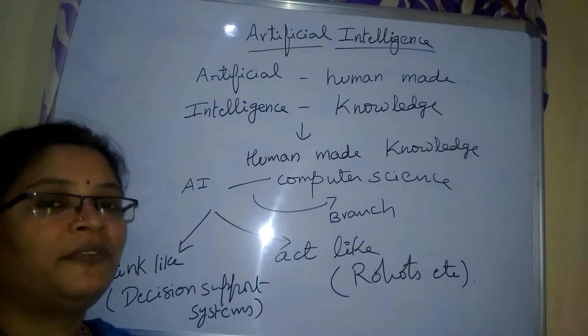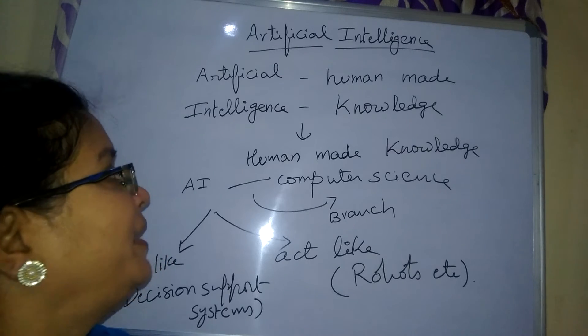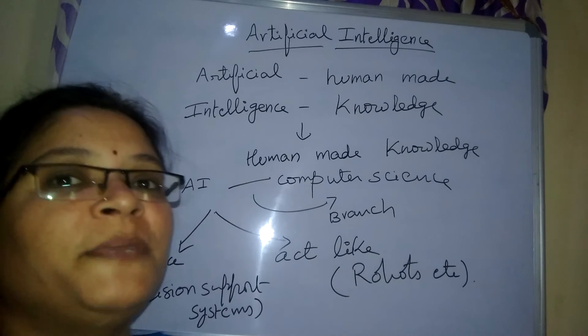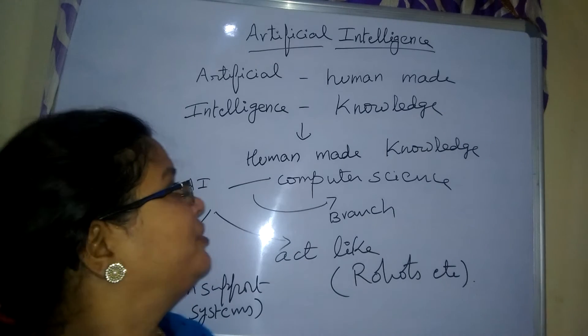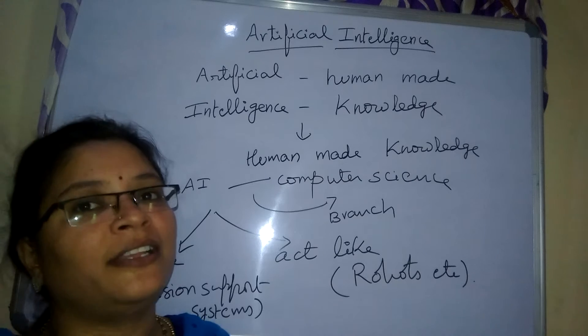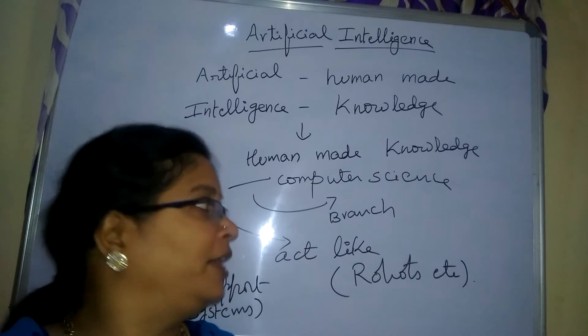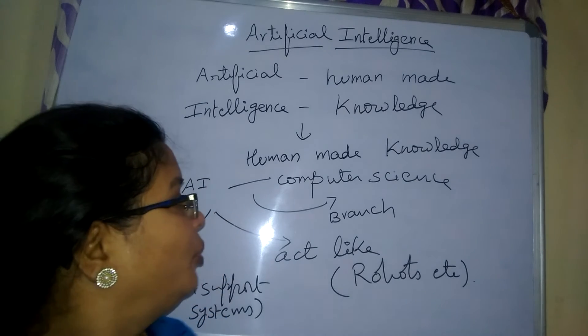What is the meaning of the word artificial? It is human made. Intelligence means knowledge. So totally, what is artificial intelligence? It is a human made knowledge.